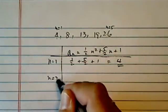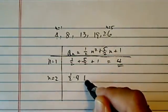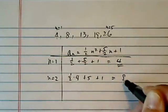n equal to 2, I have half times 4, plus 5, plus 1, and I have 8.